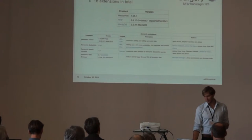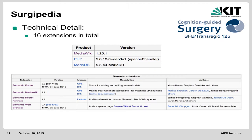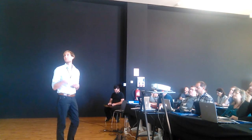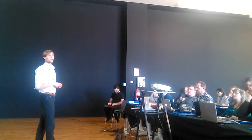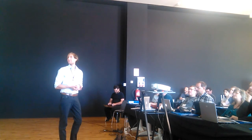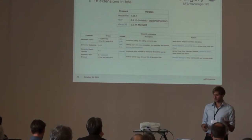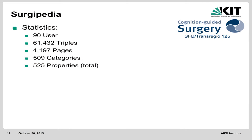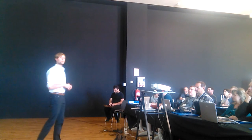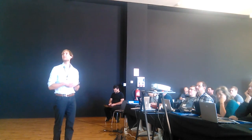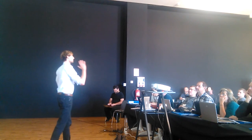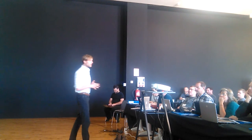Since a couple of weeks we also use it to model BPMN networks and annotate them with meta-information. Technical details: we have version 1.25, a MariaDB database, and right now 16 extensions — for example Semantic Forms. We have 90 users, more than 60,000 triples in the Semantic MediaWiki instance, more than 4,000 pages, more than 500 categories, and 525 properties.